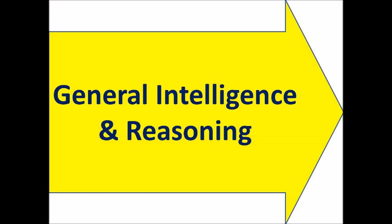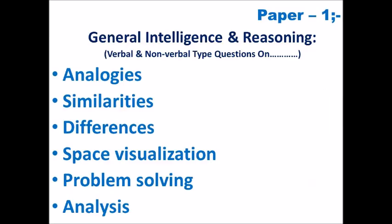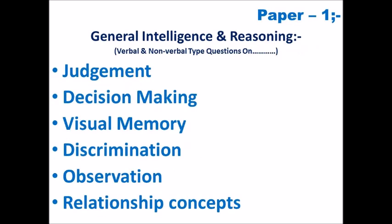Here is General Intelligence — the first topic in Paper 1. These are the topics covered in verbal and non-verbal type questions: Analogies, Similarities, Differences, Space Visualization, Problem Solving, and Analysis. The paper also contains Judgment, Decision Making, Visual Memory, Discrimination, Observation, and Relationship Concepts.